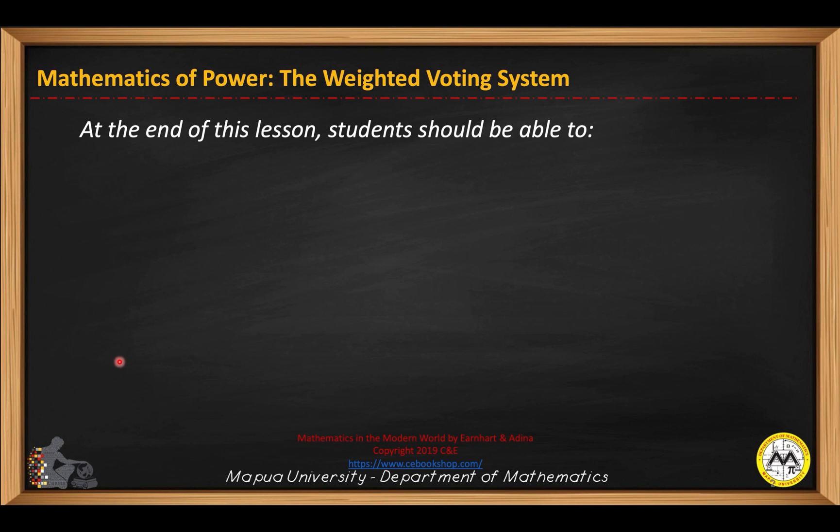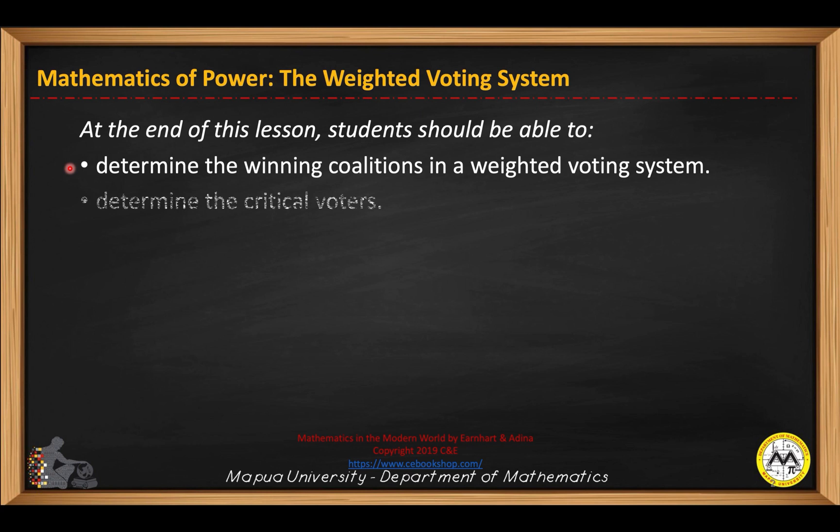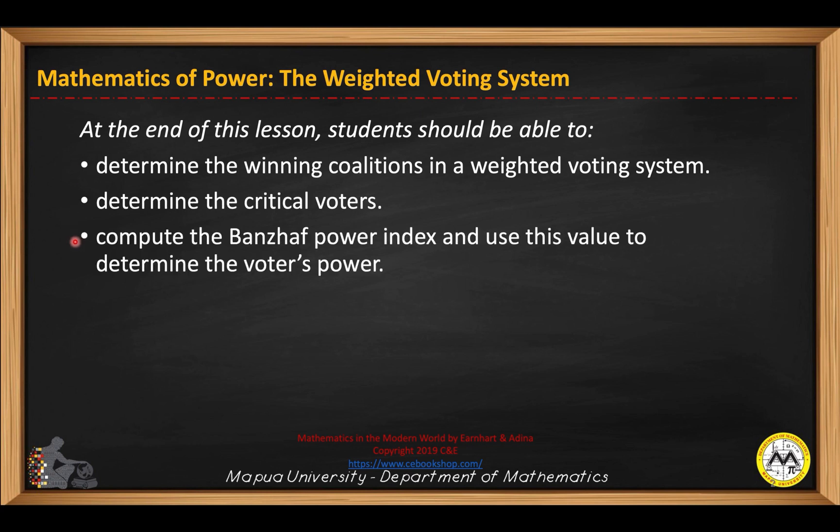At the end of the lesson, students should be able to determine the winning coalitions in the weighted voting system, determine the critical voters, compute the Banzhaf power index, and use this value to determine the voter's power.